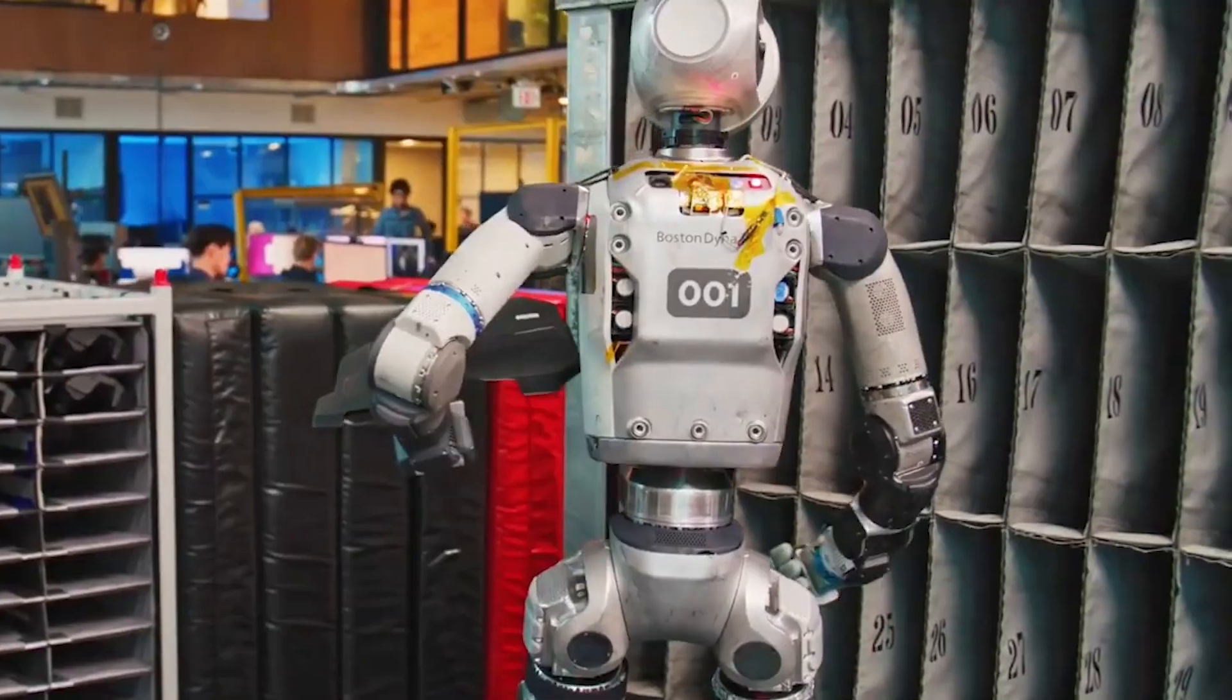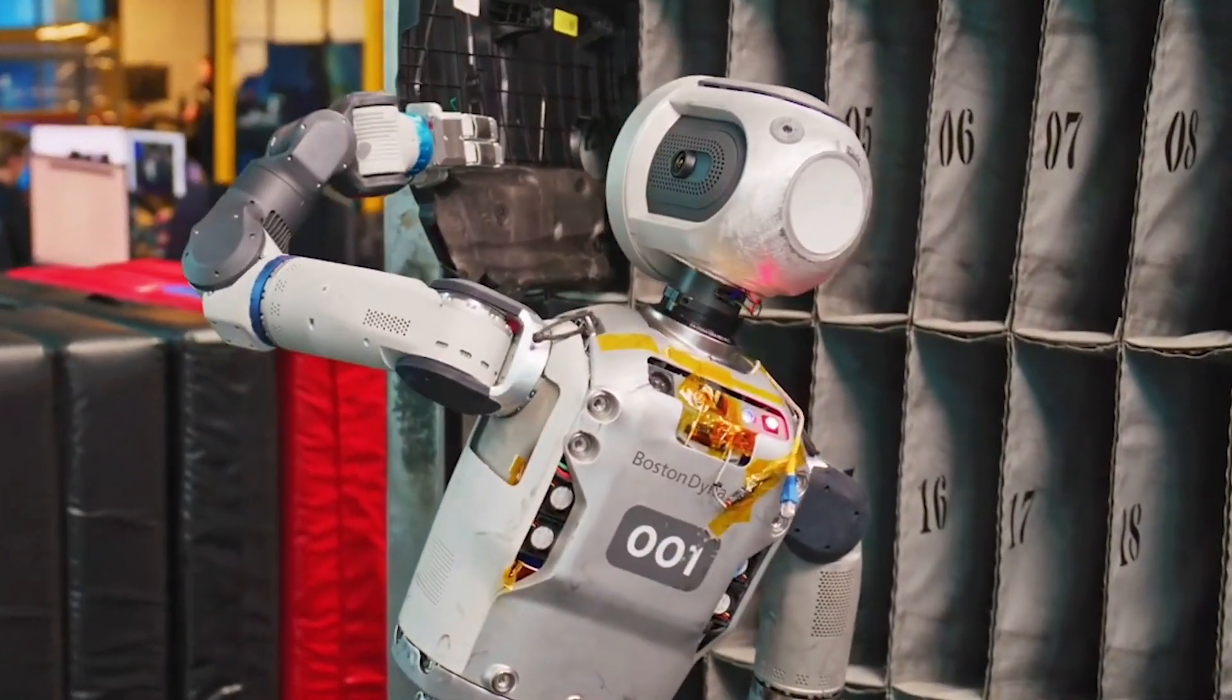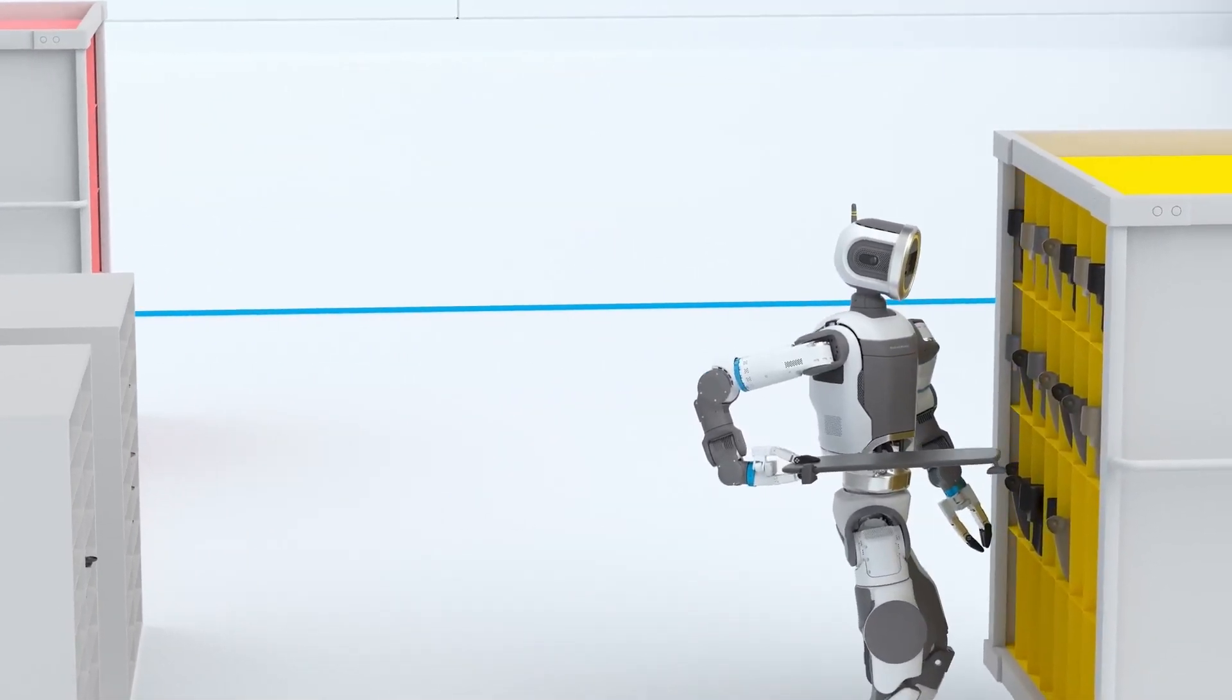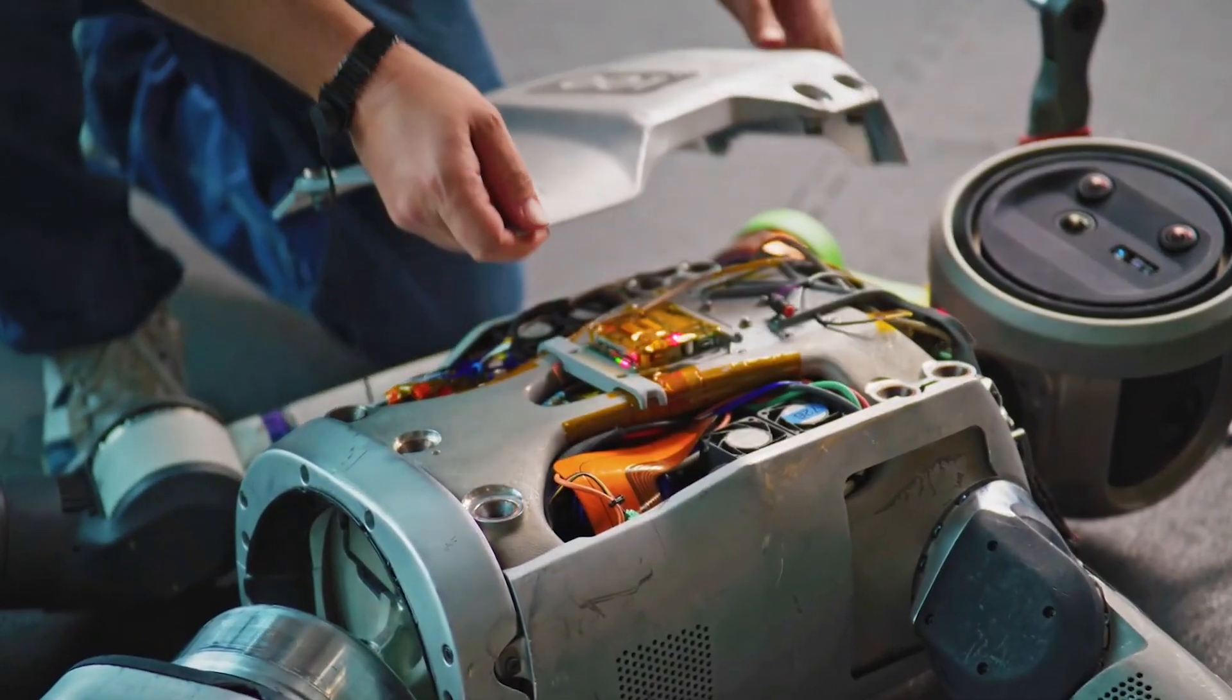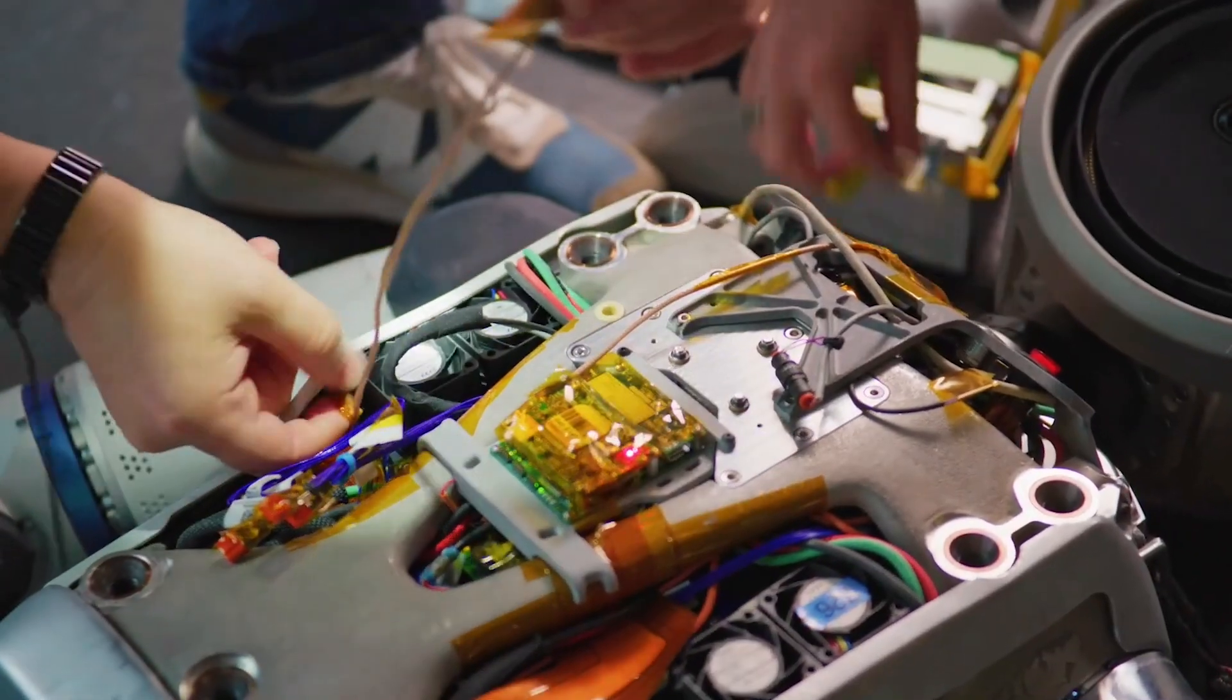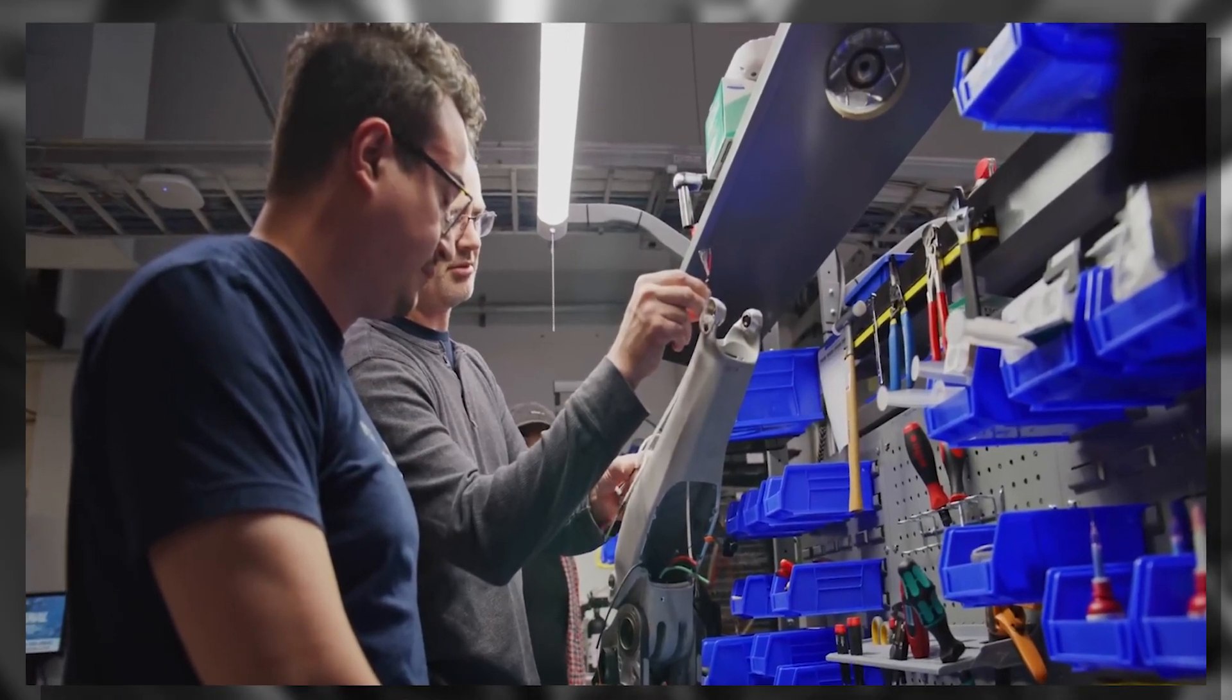Beyond mobility, Atlas is learning to manipulate objects with AI-driven adaptability. It can track, adjust, and correct itself when handling real-world tasks, using data from labs and simulations to improve over time. The team sees this as a step toward robots that can work in dynamic environments, not just controlled settings.